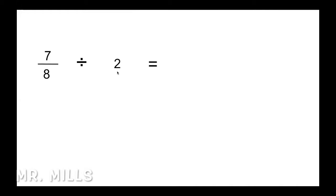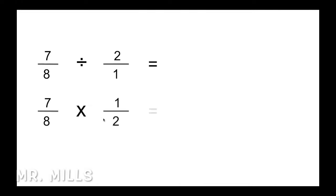Next: 7 eighths divided by 2. Remember, 2 is 2 over 1. We don't like to divide, so we change the symbol to multiplication and take the inverse: 2 over 1 becomes 1 over 2. Now multiply straight across: 7 times 1 is 7, and 8 times 2 is 16. So 7 sixteenths. That's all you have to do for dividing fractions.